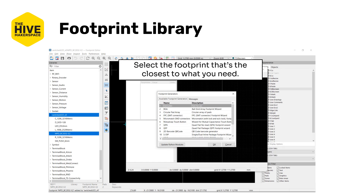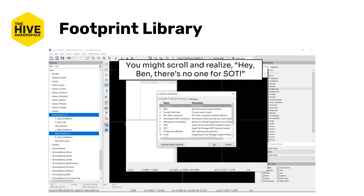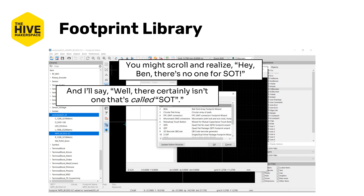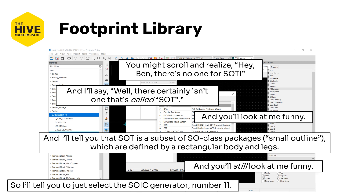The wizard gives you a bunch of different options, so you want to select the one closest to what you need. The IC is a TSOT-23-6 — that's the six-pin variant of the TSOT-23 package, which is the thin variant of an SOT-23 package. You might scroll and realize there's no wizard called SOT. That's because SOT is a subset of the SO class — small outline — packages defined by rectangular bodies and external legs. Select the SOIC generator, which is number 11, because SOIC stands for small outline integrated circuit, the overarching family that includes SOT types among many others.